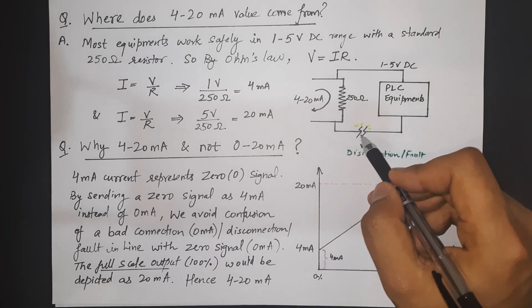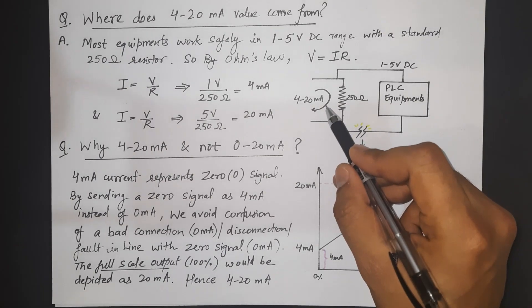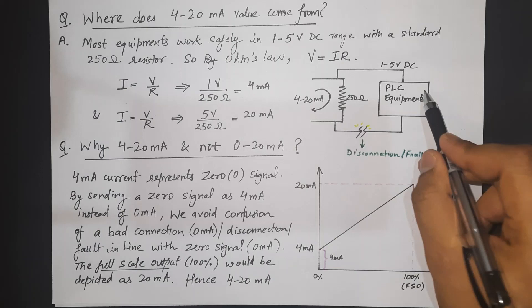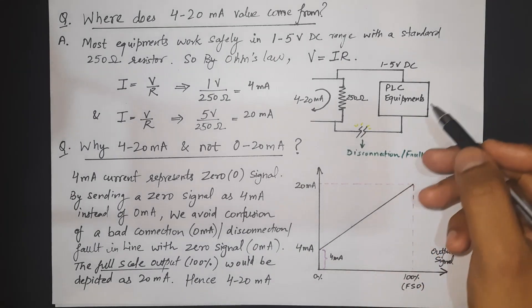That means 0 mA disconnection or fault in the line with 0 signal 0 mA. Let's suppose there is some disconnection in this line going from the transducer to the control room.